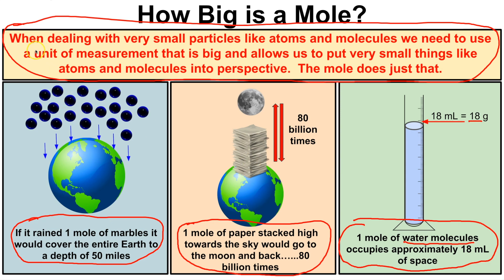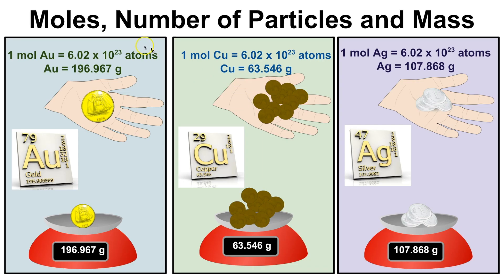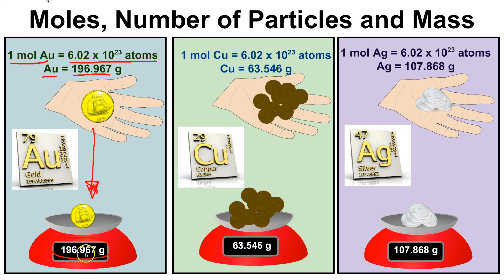Now let's look at the relationship between moles, the number of particles, and mass. Suppose I have one mole of gold — that means I have 6.02 times 10 to the 23rd atoms of gold, and if I put that many atoms on a scale it will have a mass of 196.967 grams. So one mole of gold contains Avogadro's number of atoms, and those atoms have a mass of 196.967 grams.